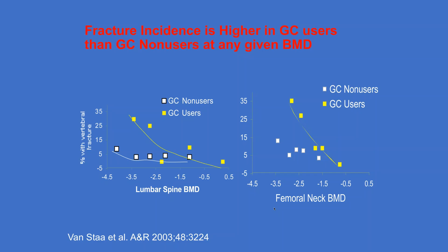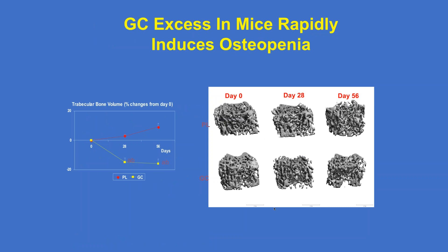Something important was shown by Van Statt: looking at postmenopausal women with osteoporosis and patients on glucocorticoids for one year, patients on glucocorticoids fracture at what we would call normal or actually mildly abnormal BMDs — even more so in the hip. The glucocorticoids make bone very fragile and bone strength is reduced at normal bone densities.